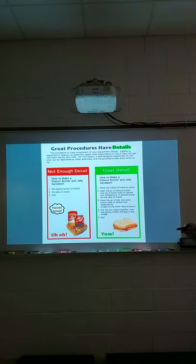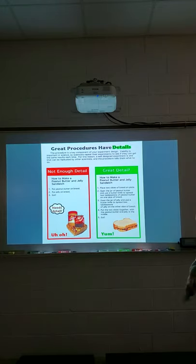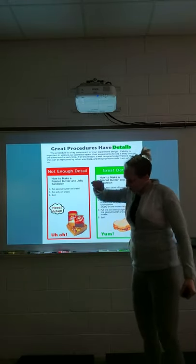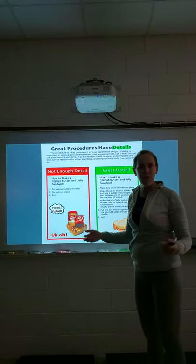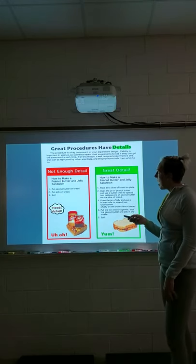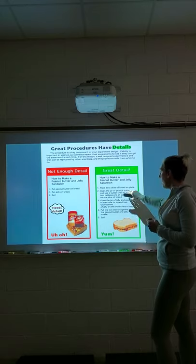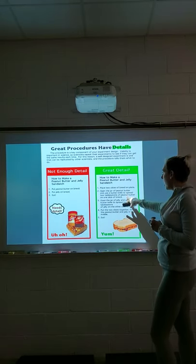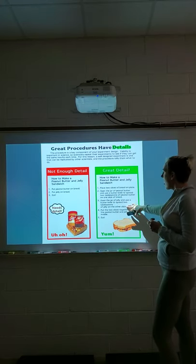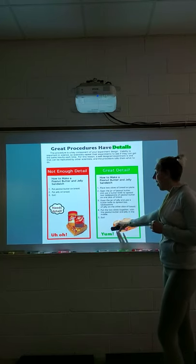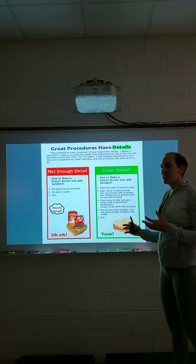Here's a great example: 'How to make a peanut butter and jelly sandwich — put peanut butter on bread, put jelly on bread, eat.' That's a bad SOP. Which side of the bread? On a plate or the counter? How much peanut butter? Do you use a knife? The good version specifies: put two slices of bread on a plate, open the jar of peanut butter and use a butter knife to spread two tablespoons on one slice, open the jar of jelly and use a butter knife to spread two tablespoons on the other slice, put the two slices together with the peanut butter and jelly in the middle, then eat. It's not a ton of detail, but it explains exactly what you want done.